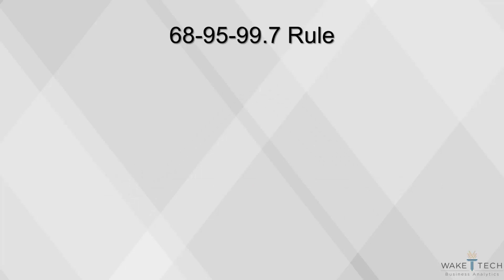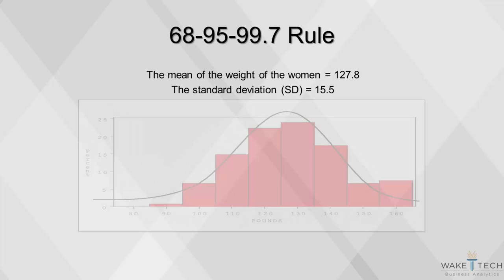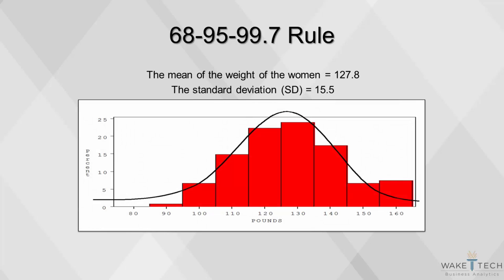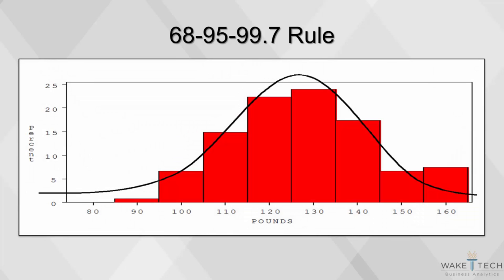But how good is this rule for real data? Let's check out an example. Here's our data. The mean of the weight of 120 women runners in a sample is 127.8 pounds. The standard deviation is 15.5. Here's what our distribution would look like. Let's look a little more closely at that distribution.